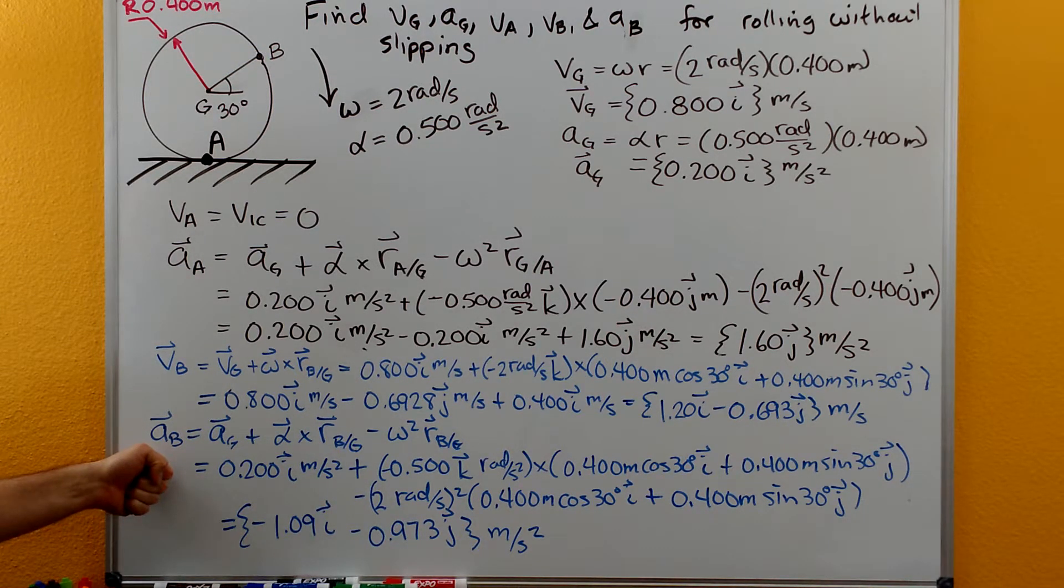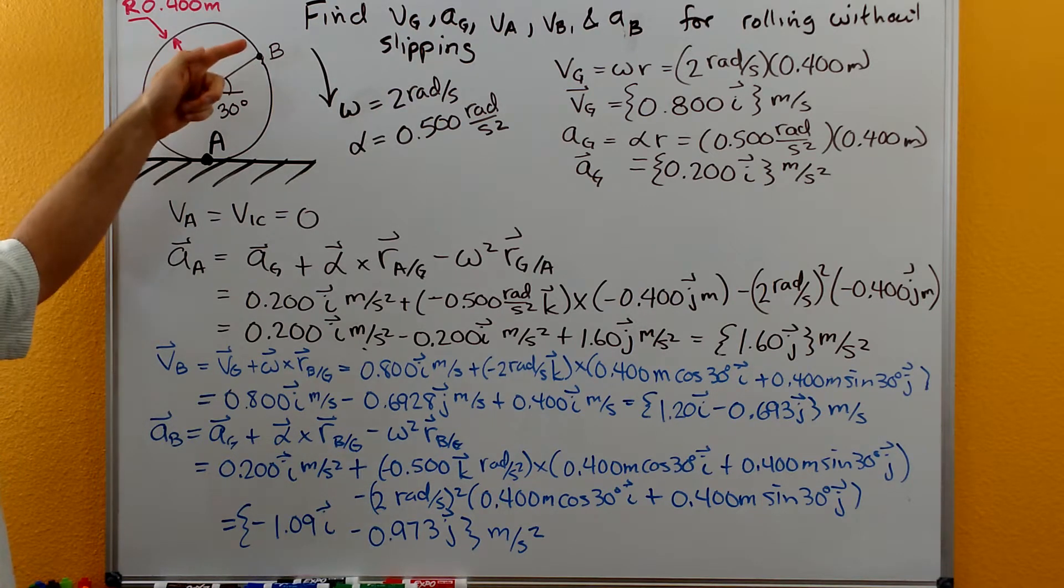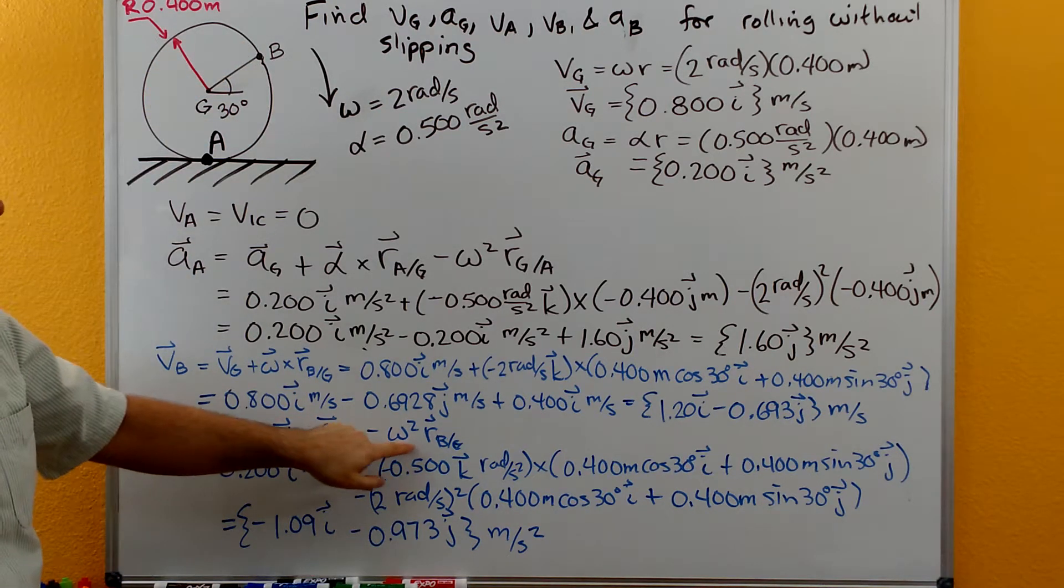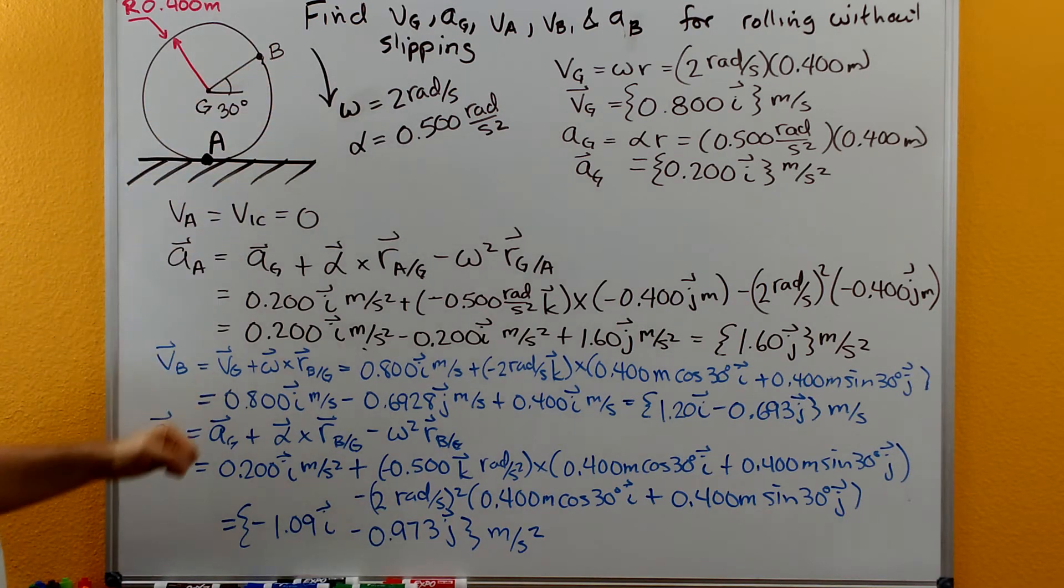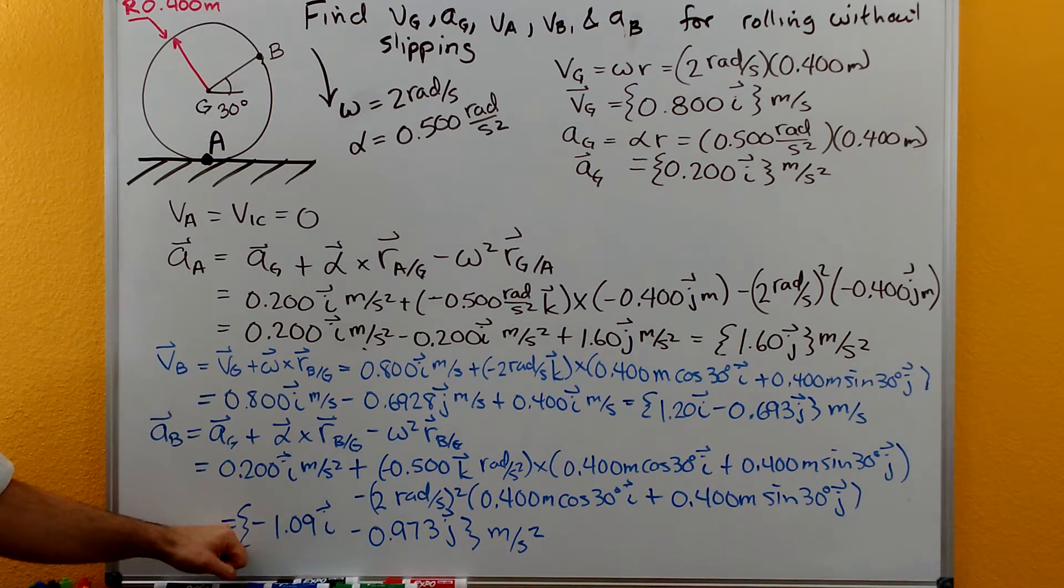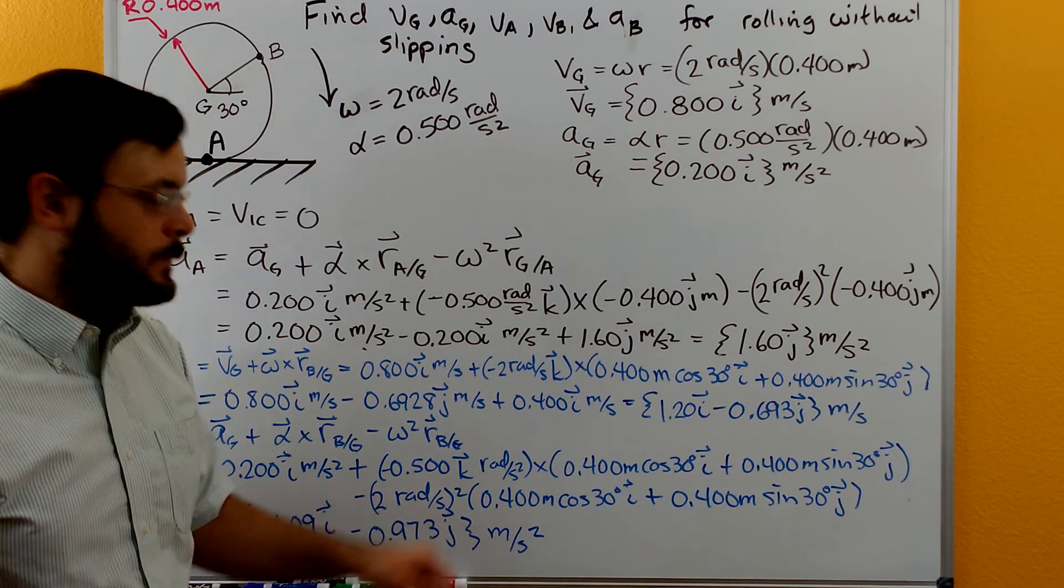The acceleration at B is going to be the acceleration at G plus alpha cross R from G to B minus the omega squared times the position vector starting at G and going up to B. And so here's our vector equation and then reducing that down that gives us negative 1.09 I minus 0.973 J meters per second squared.